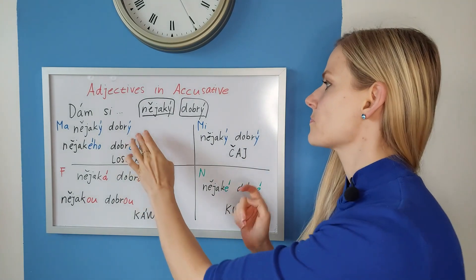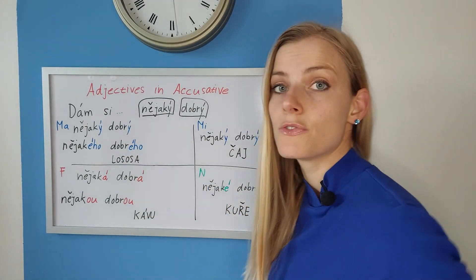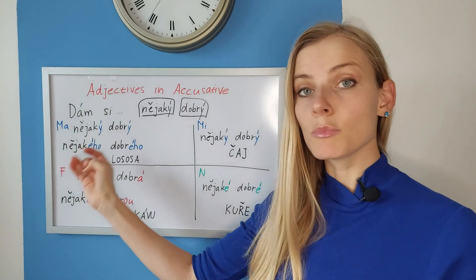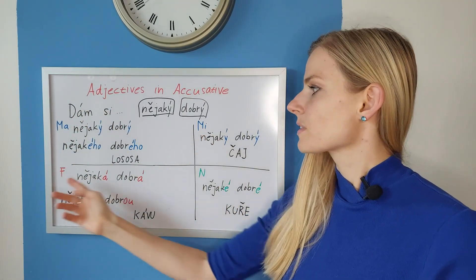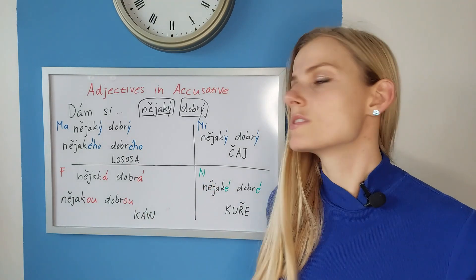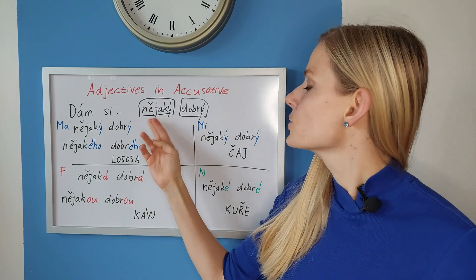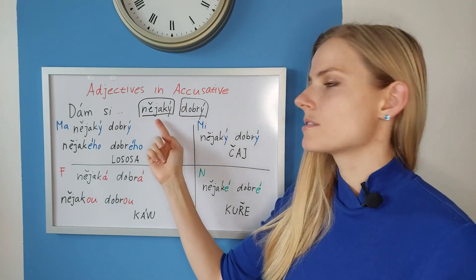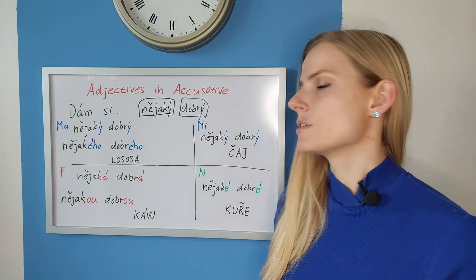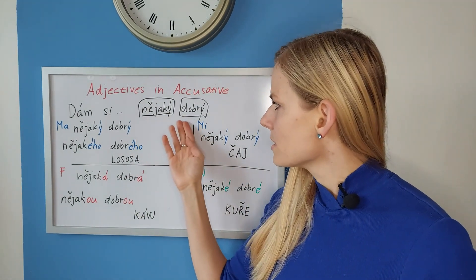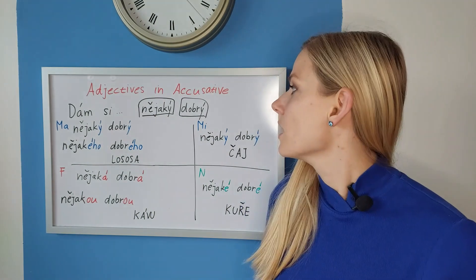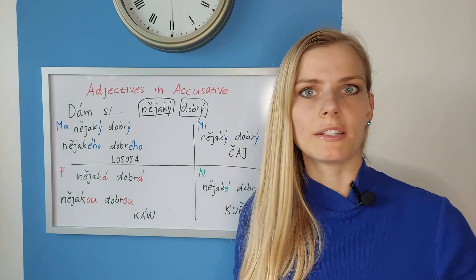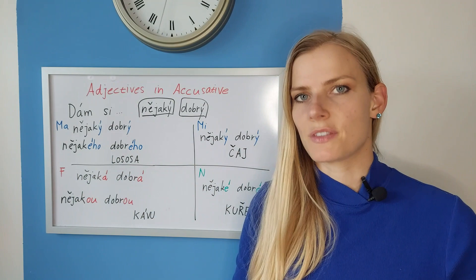In the previous video I had a chart with four fields depending on gender: masculine animate, which includes people and animals, masculine inanimate, feminine, and neuter. I'm going to use the same system and we are going to start with two adjectives: nějaký and dobrý. Nějaký means 'some' or 'some kind of' and dobrý means 'good'. I wrote the base form here, just like in the previous video, and I divided this into two topics — food, and people and animals.